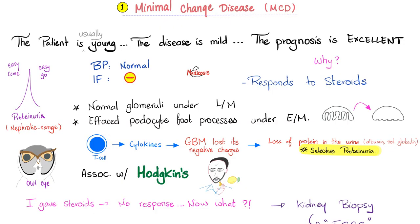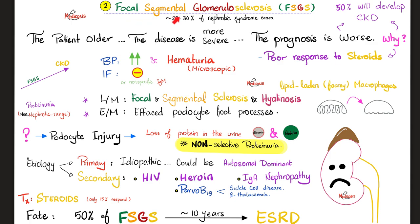Minimal change disease was discussed before — pause and review. The patient was younger, the prognosis is excellent, it was associated with Hodgkin's, the response to steroids was magnificent, and there was no deposition whatsoever. Focal segmental was discussed before: the patient was older, the disease was much worse, the prognosis was much worse, the response to steroids was dismal. In the vast majority of cases there was no deposition. Focal segmental is associated with heroin, HIV, and a virus known as Parvovirus B19.